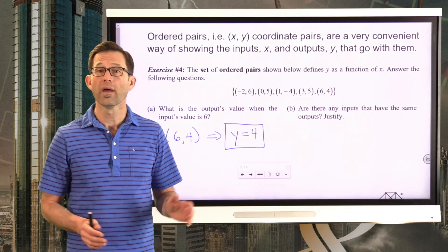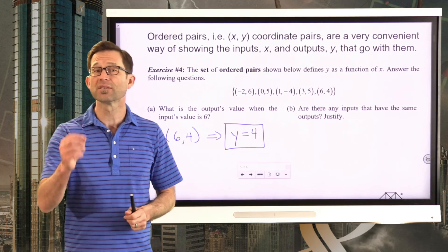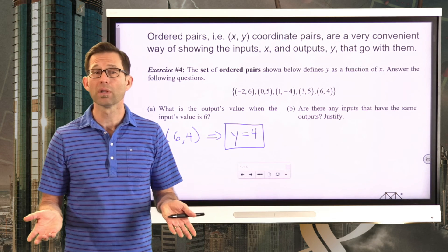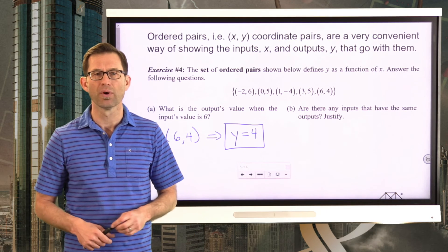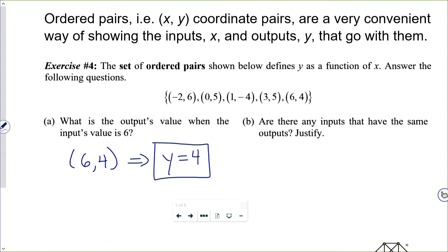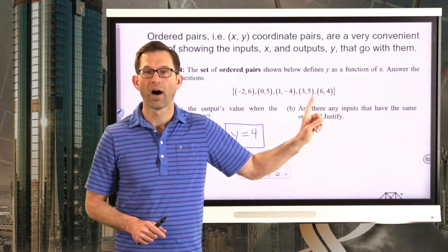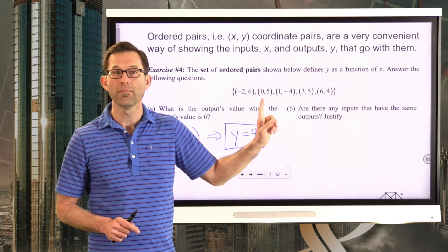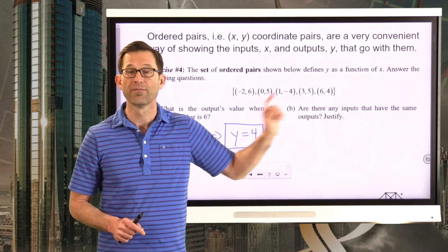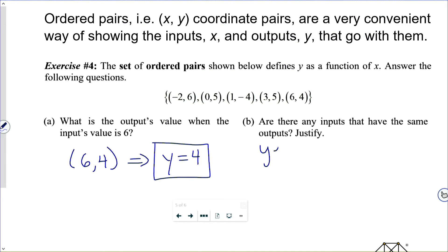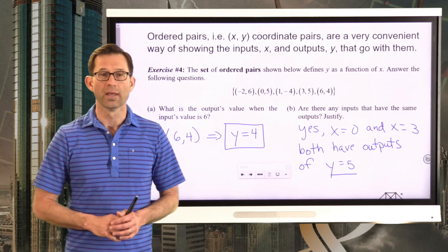Well, what do you guys think? Take a look at this function. Are there any inputs that give us the same output? Which again, let me be very clear. Having repeated outputs? Completely okay for a function. Pause the video now and see if there are any inputs that have the same output. You bet there are. Our outputs are 6, 5, negative 4, 5, and 4. So it should be pretty obvious that an input of 0 and an input of 3 both have outputs of 5. So that's what I'm going to say. Yes, x equals 0 and x equals 3 both have outputs of y equals 5.